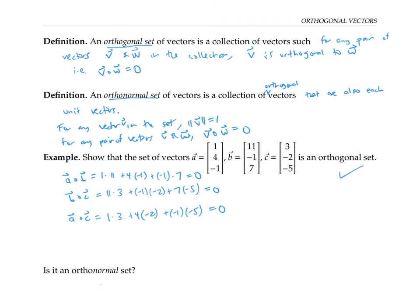Is it however an orthonormal set? Well, no, because, for example, the length of A is equal to the square root of eighteen, the length of B is the square root of one hundred seventy-one, and the length of C is the square root of thirty-eight. So this set doesn't have any unit vectors, and it needs all of its vectors to be unit vectors as well as orthogonal to each other to be an orthonormal set.